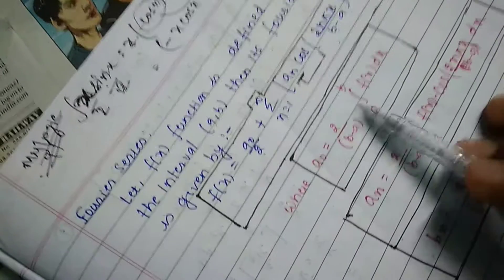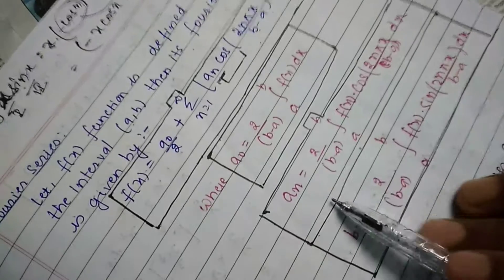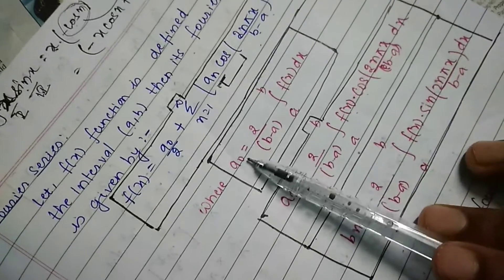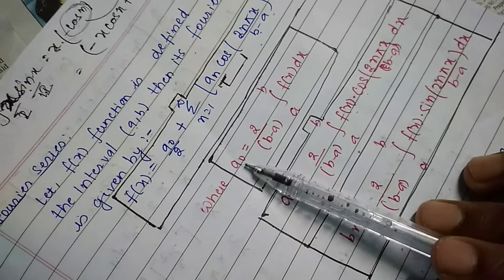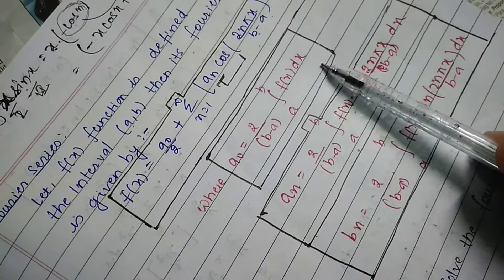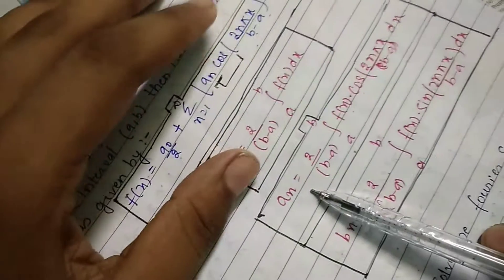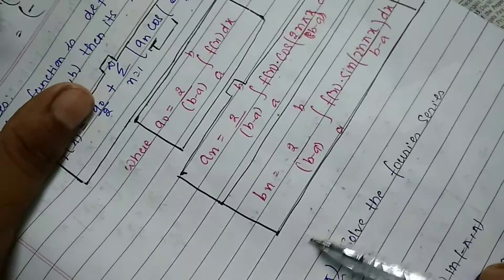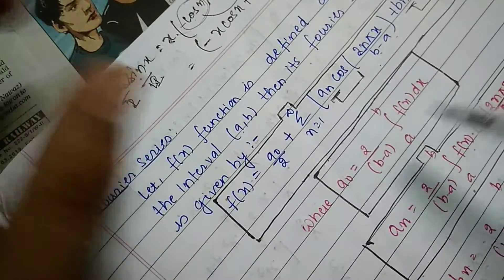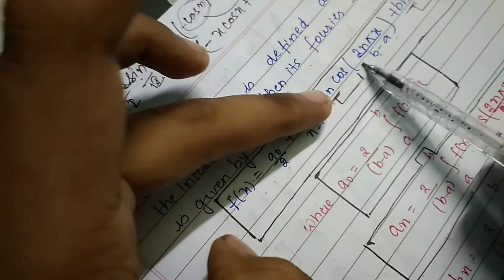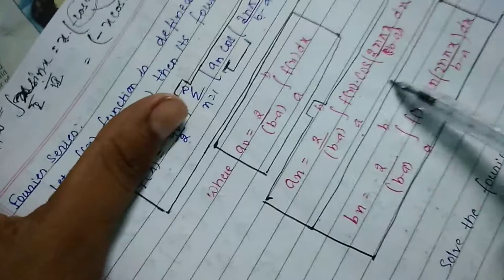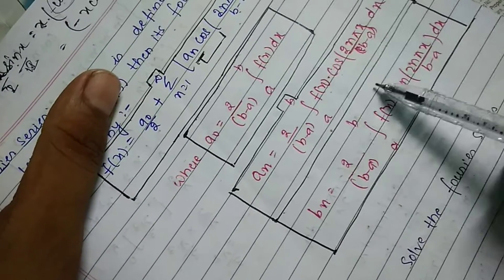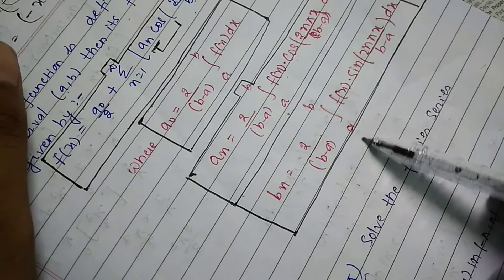The Fourier coefficients are: a₀ = (2/(b-a)) · integral from a to b of f(x) dx; aₙ = (2/(b-a)) · integral from a to b of f(x)·cos(2nπx/(b-a)) dx; bₙ = (2/(b-a)) · integral from a to b of f(x)·sin(2nπx/(b-a)) dx. With aₙ there is a cosine term, and with bₙ there is a sine term.